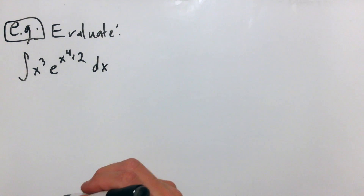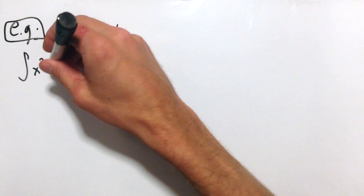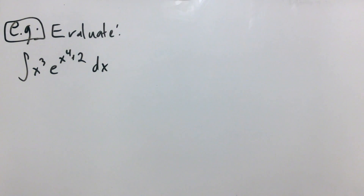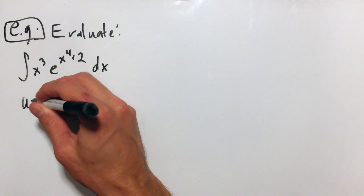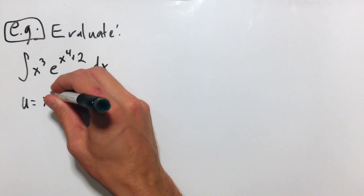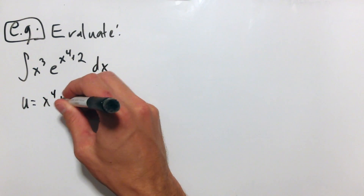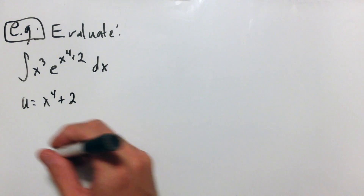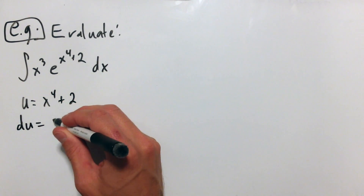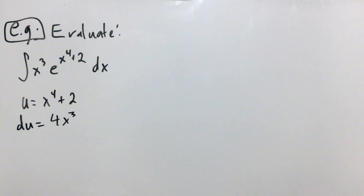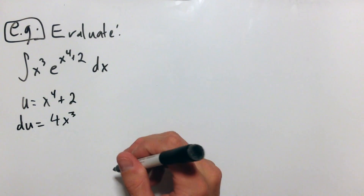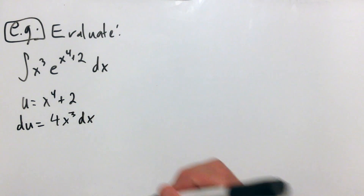Now I see a product and a function composition, which suggests substitution is what I should try. I've got x to the fourth plus two inside of the exponential function, so a good substitution would be u equal to whatever is in the exponent, which is x to the fourth plus two. Then du is the derivative of x to the fourth, which is four x cubed. The derivative of two is zero, so I'm left with four x cubed dx.